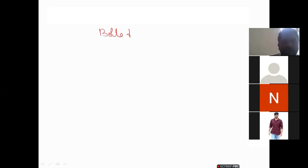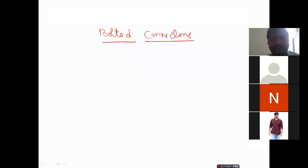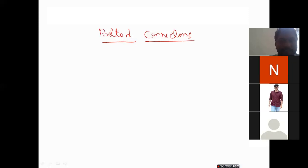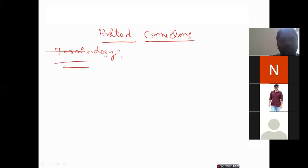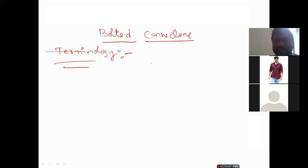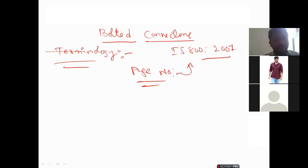Today I am explaining about bolted connections. In the previous class I discussed briefly, and especially today I will explain what bolted connections are, the different types, the terminology, and the conditions and code provisions as per IS 800-2007, including the most important page numbers. In this class I will explain completely regarding the theory as well as the equations, and then tomorrow we will solve some problems.